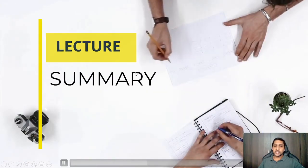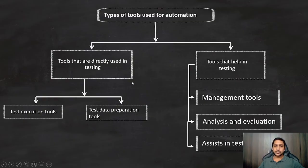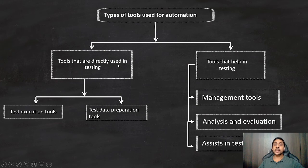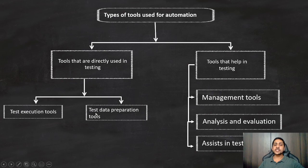To summarize: there are two types of tools used for automation. The first is tools that are directly used in testing, and the second is tools that help in testing. Tools directly involved are the test execution tool and test data preparation tool, whereas tools which help in testing are the test management tool, analysis and evaluation tool, and tools that assist in testing.